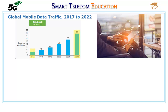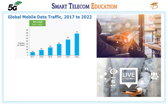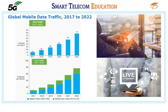Mobile data traffic will grow at a compound annual growth rate of 46% from 2017 to 2022. Mobile video content has much higher bit rates than other mobile content types. Mobile video will grow at a CAGR of 55% between 2017 and 2022, higher than the overall average mobile traffic CAGR of 46%. Of the 77 exabytes per month crossing the mobile network by 2022, nearly 61 exabytes will be due to video. Mobile video represented more than half of global mobile data traffic beginning in 2012.